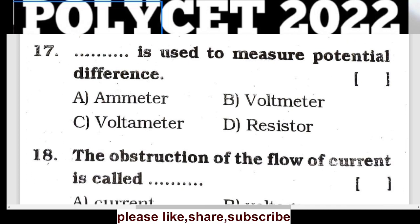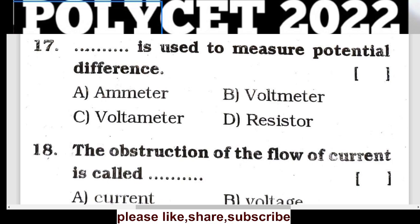Question 16: What is used to measure potential difference? The equipment used to measure potential difference is a voltmeter. Option B is the correct answer.